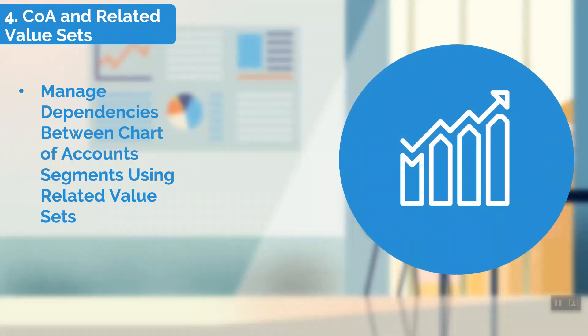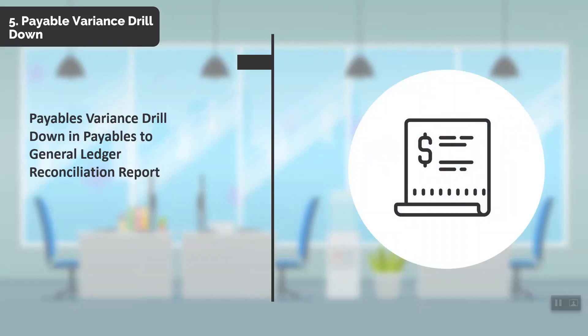Payables variance drill down. In the payables to general ledger reconciliation report, the payables variance details report provides details of payable variance amounts. Click the payables variance amount to access the drill down report. The report lists all the transactions and transaction amounts affecting the payables variance, displays the validation status of each transaction, and the component causing the variance, so you can use this information to correct transactions and eliminate the reconciliation variance for the related accounted periods.